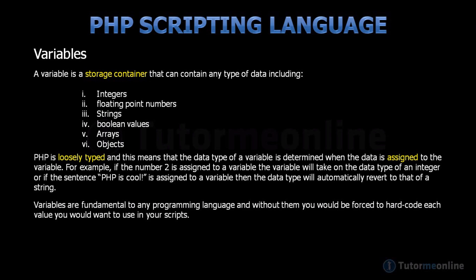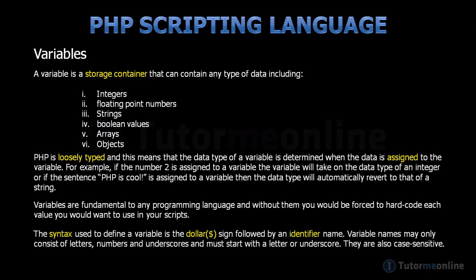Variables are fundamental to any programming language, and without them, you'd be forced to hard-code each value you'd want to use in your script. The syntax used to define a variable is a dollar sign followed by an identifier. An identifier is any name that you want to give your variable, and these can consist of letters, numbers, or underscores, and must start with a letter or an underscore. They are also case-sensitive, as you can see in the examples below.